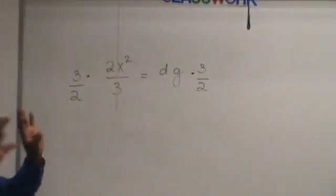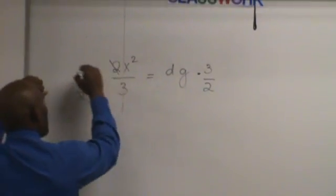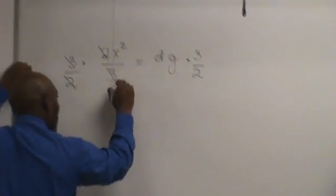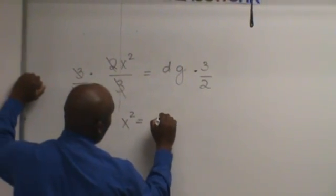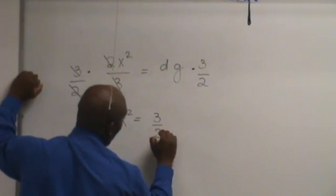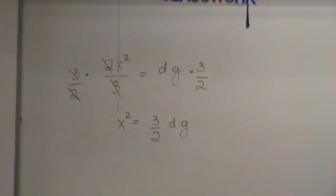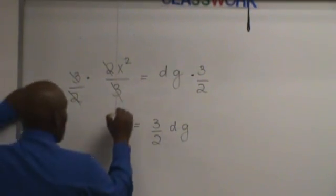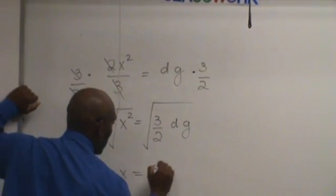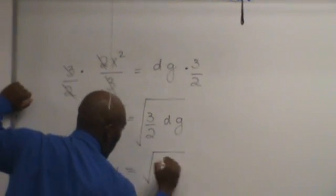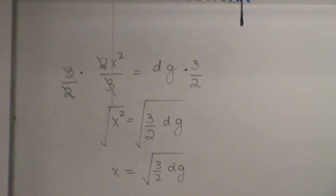Now, let's do that first before we deal with the square, okay? This cancels this. This cancels this. Okay, so what do we have? We have x squared equals 3 over 2 b times g. Now we get rid of the square. How do you get rid of the square? Square root. Right? X equals the square root of 3 over 2. Done. You're going to have to.